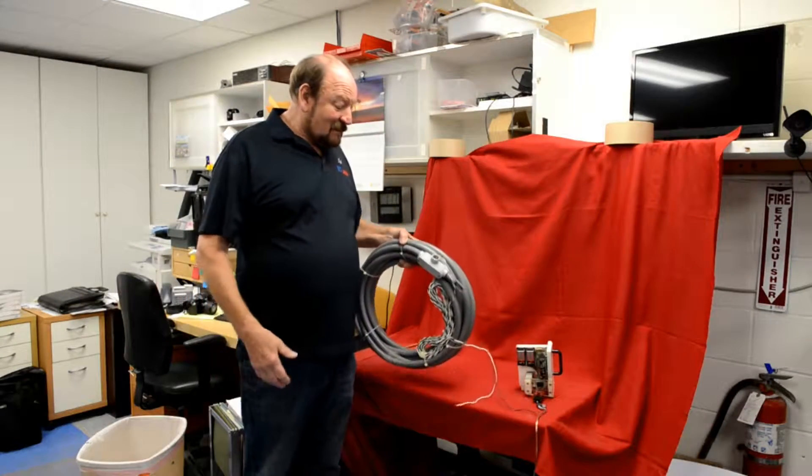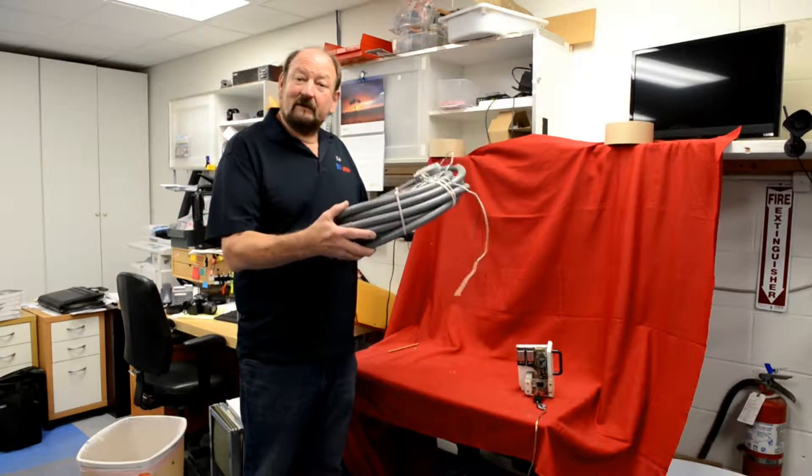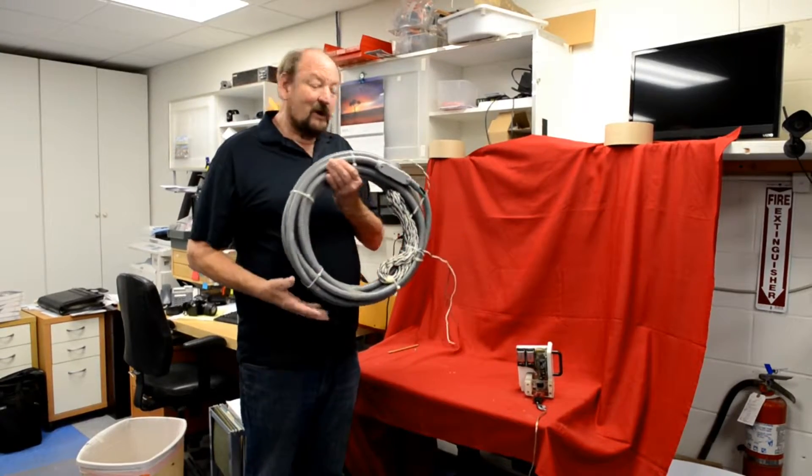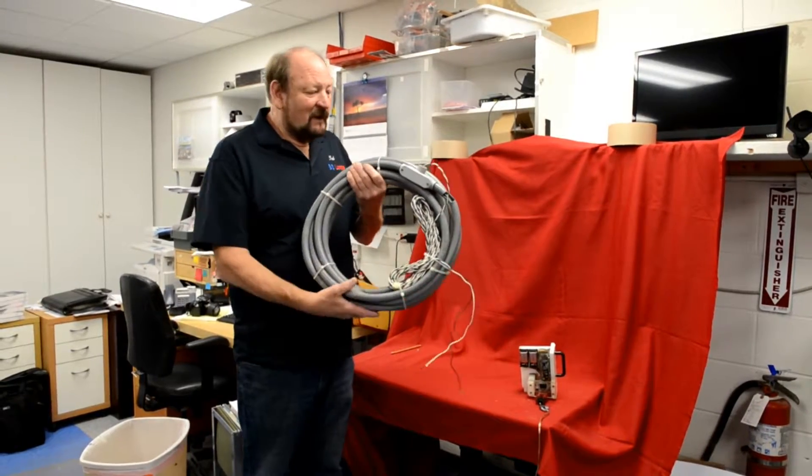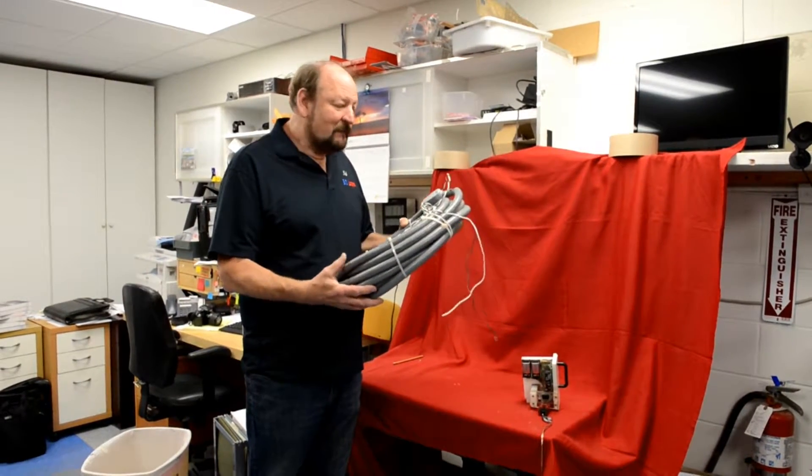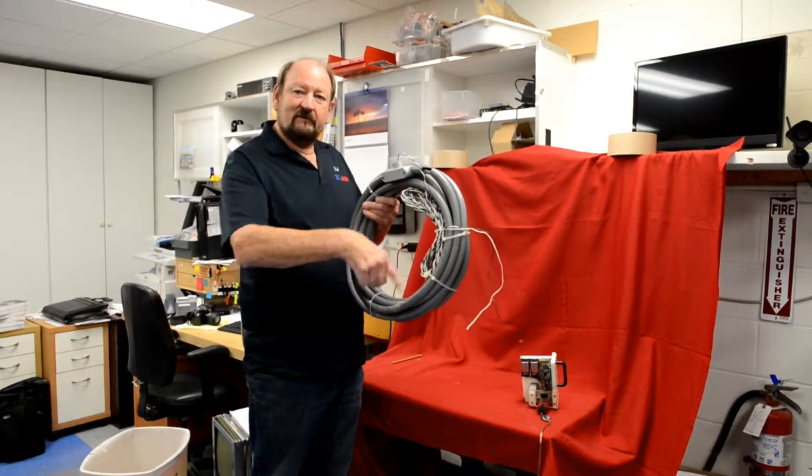All right, today we're going to learn a little bit about inductance loop design. Here I have what they call a national loop, and it's in the outer jacket of flex tubing. The wire is inside for the windings for the loop.